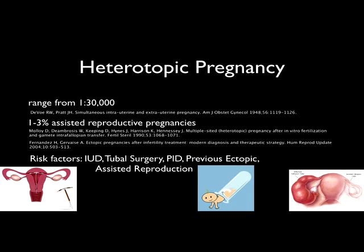Heterotopic pregnancy is quite rare, however in the age of assisted reproductive pregnancies it is becoming more and more common. Early estimations showed it was about one in thirty thousand pregnancies; however, when patients are using in vitro fertilization the rate increases to one to three percent. Other risk factors for heterotopic pregnancy include a previous IUD, tubal surgery, pelvic inflammatory disease, previous ectopic pregnancy, or assisted reproduction.